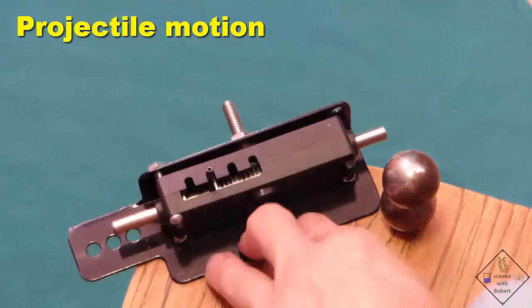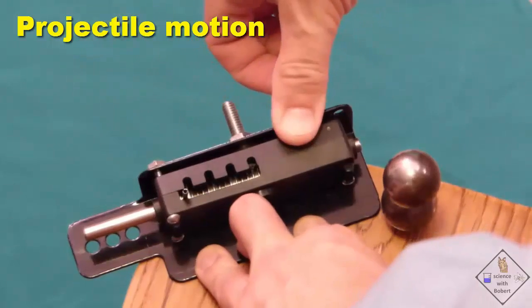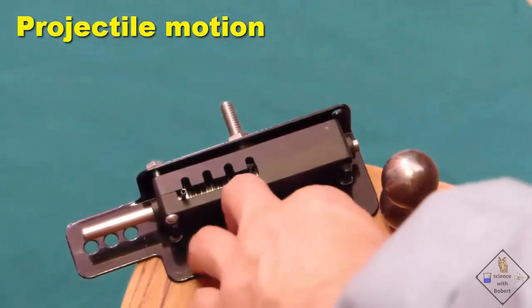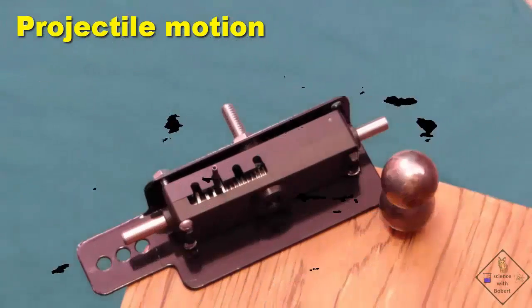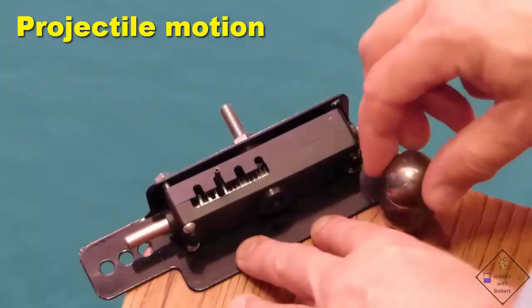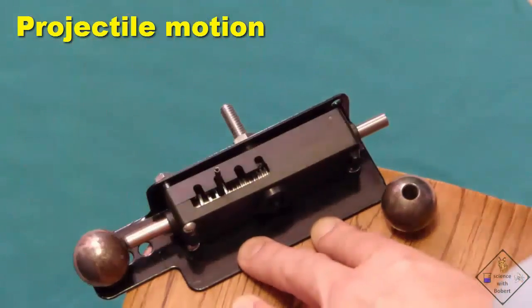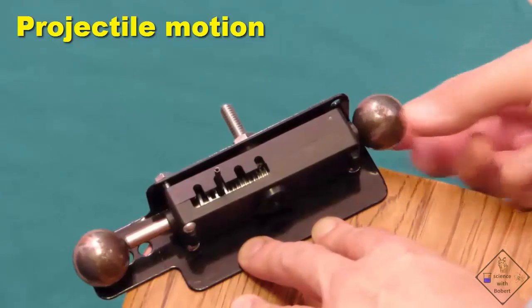This is a projectile motion device. When Dr. Smith pushes this lever, one ball will shoot straight out, the other one will be dropped. For example, this ball will be shot straight out, and this is the one that's going to be dropped.